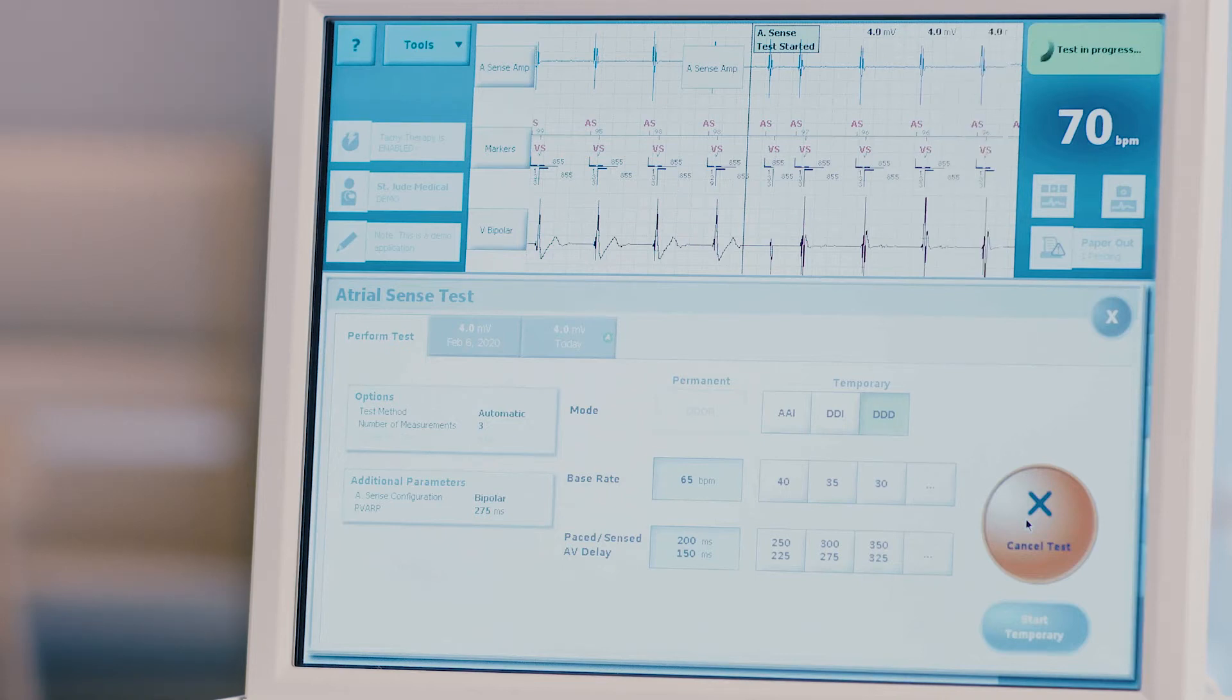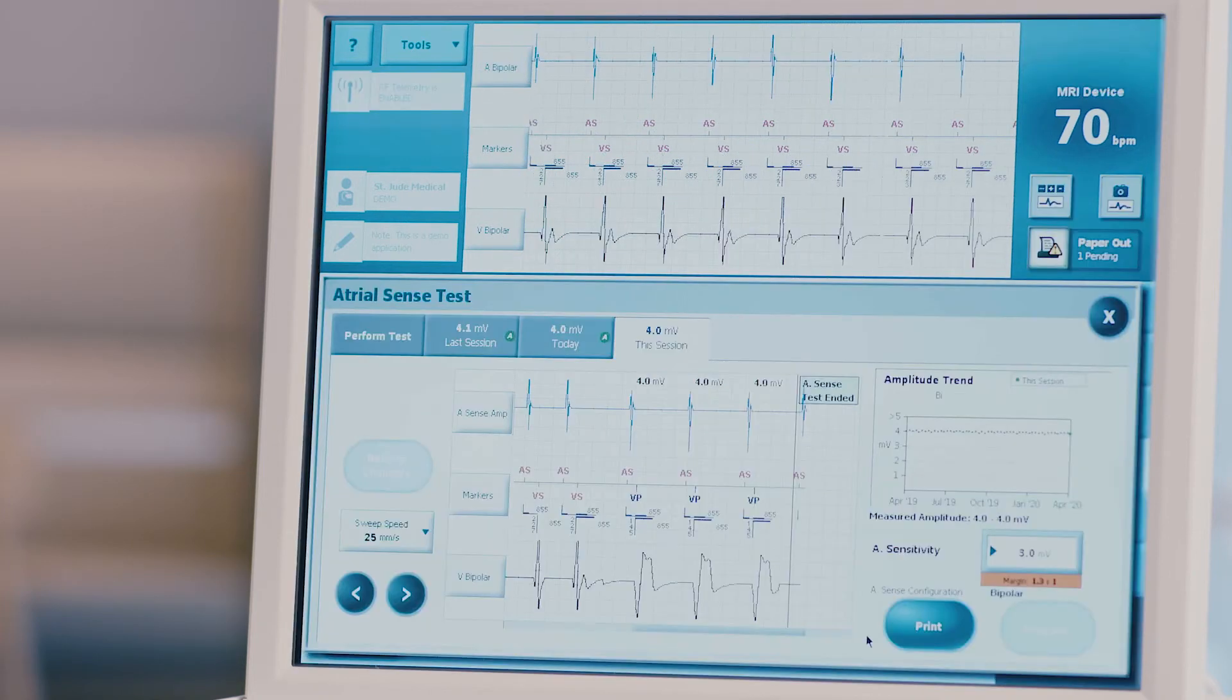For automatic testing, the test will end once the data point is collected. For manual testing, the test will end once you visually obtain the measurement and release the button. You can cancel a test at any time by pressing the yellow cancel test button. No data will be recorded.